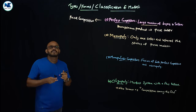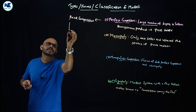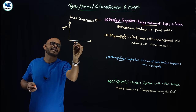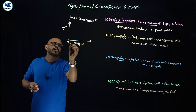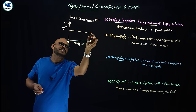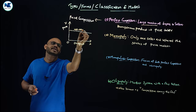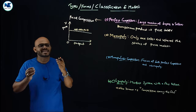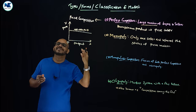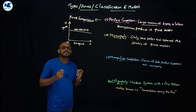Now, regarding the demand curve in perfect competition: the demand curve of the firm is a perfectly elastic demand curve. On the x-axis we have output, on the y-axis we have price. Interestingly, in perfect competition, marginal revenue equals average revenue equals price equals demand — that is, MR = AR = P = D. This is a very important relationship.